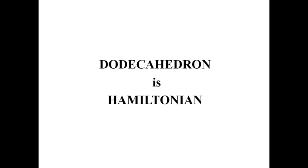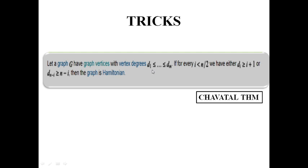Now let G be a graph with the degree sequence d1 ≤ d2 ≤ ... ≤ dn. If for every i less than n/2, either di ≥ i+1 or d(n−i) ≥ n−i, then we can say that the graph is Hamiltonian.